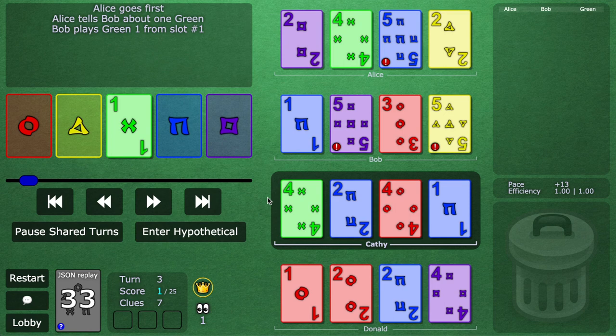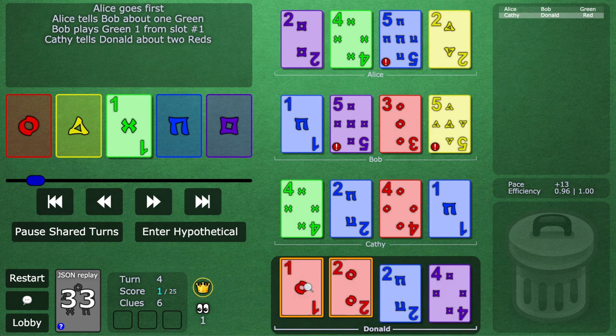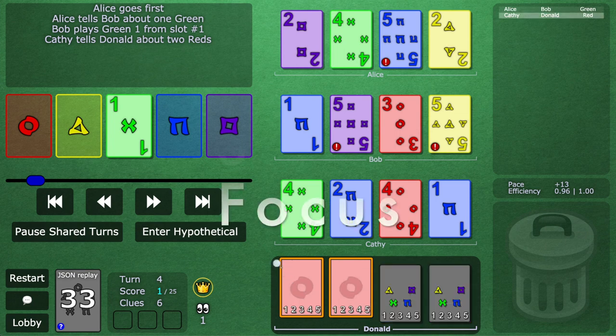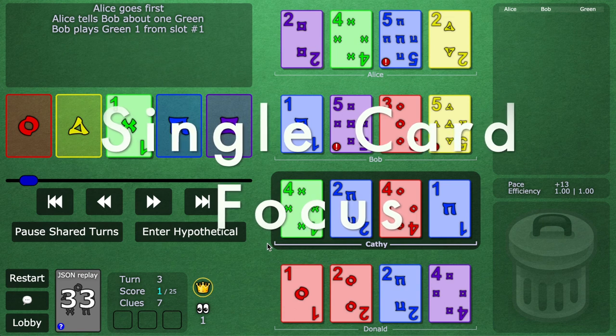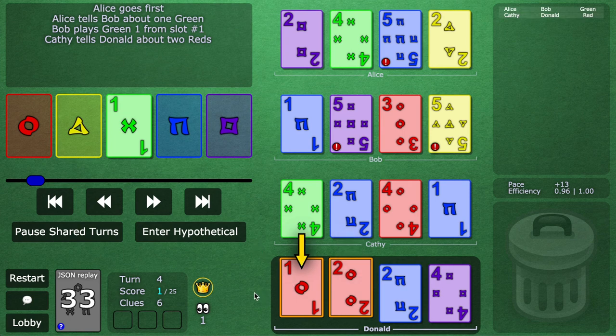So check out what Kathy does here. She's able to pick up two cards. Now once again it's Donald's turn. He can very much trust that he must have the red one, but which card should he assume it is? So that brings us to the second principle which is the idea of card focus. So we agree that whenever a clue is given, even if it touches multiple new cards, it's really only focusing on one card. And normally we agree that it's most likely that the leftmost card is the card being focused.